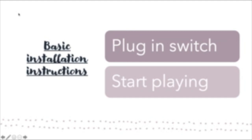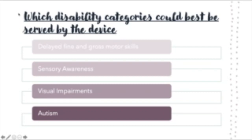The basic installation is simple: you plug in the switch and start playing. When you're done, you unplug the switch and it's ready for next time. Which disability categories could best be served? A student with delayed fine and gross motor skills can benefit from pressing down on things and sorting. Sensory awareness — being able to see colors, numbers, touch things, press buttons, and experience lights and sounds, as the Nursery Rhyme Callipitor plays lullabies and songs. Students with a visual impairment can benefit from the lights, and students with autism can also be served.